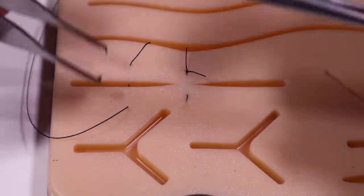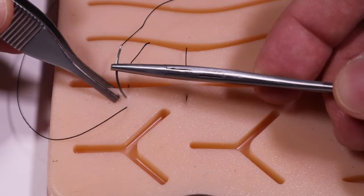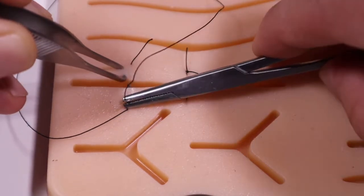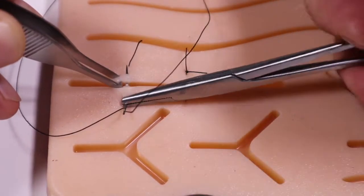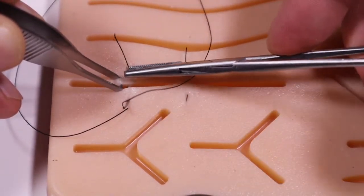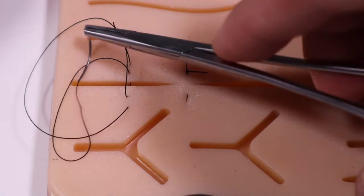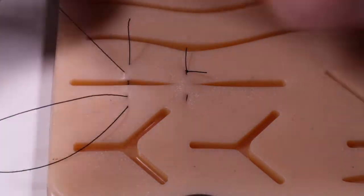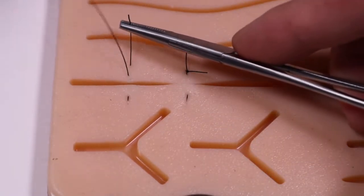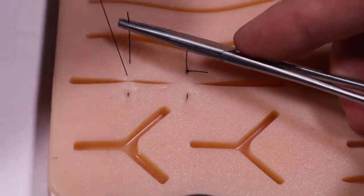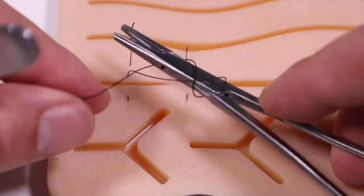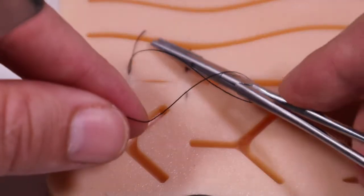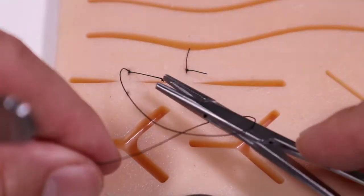We'll reverse load our needle and backhand through. I always hold the end of the suture to make sure I don't pull it through. So two forward throws, tighten it down, cinch it, reverse, and the final forward.